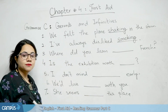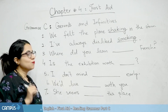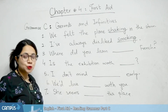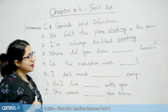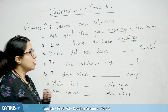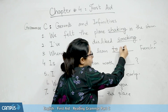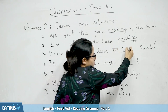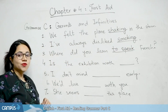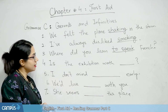Next: 'Where did you learn blank French?' The verb given is 'speak.' We need to decide: 'speaking' or 'to speak'? 'Where did you learn speaking French?' is wrong. 'Where did you learn to speak French?' is right. So the infinitive is used here.